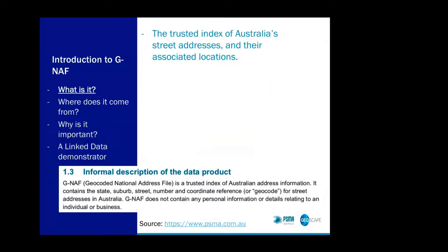Simply put, GNAF is the trusted index of Australia's street addresses and their associated locations. I'll put a snippet in from our data product description, which you can find online. I could probably put some links into the notes and I'll flick the slide deck through with some annotations later.